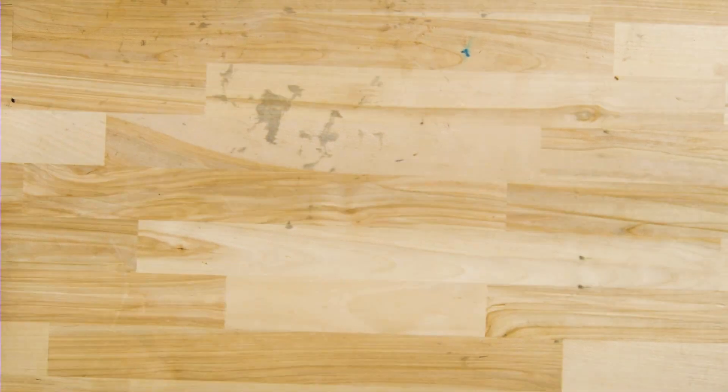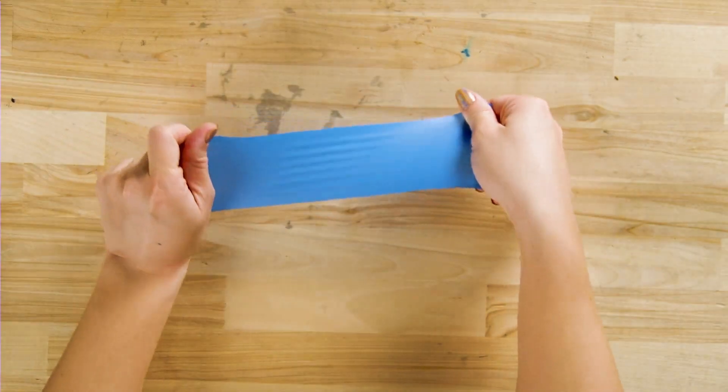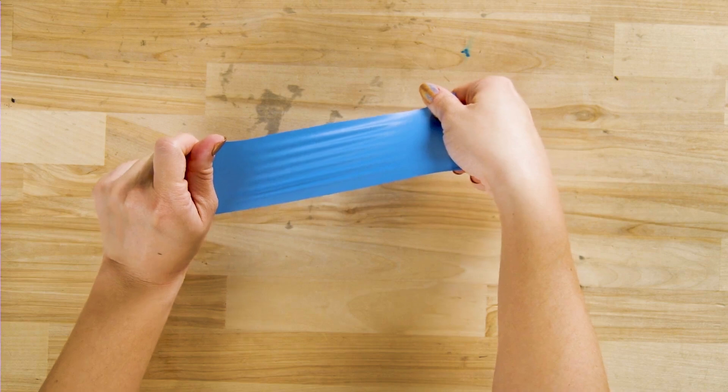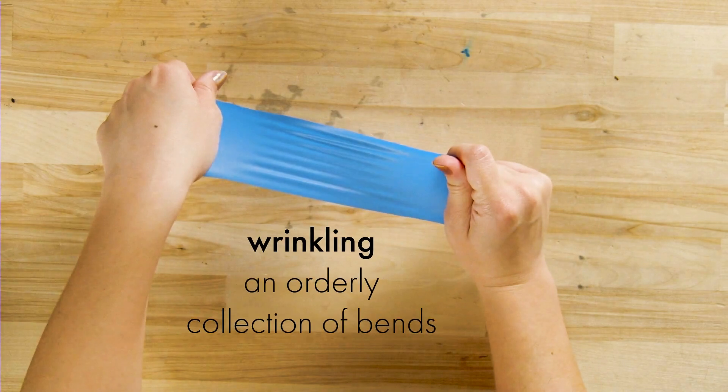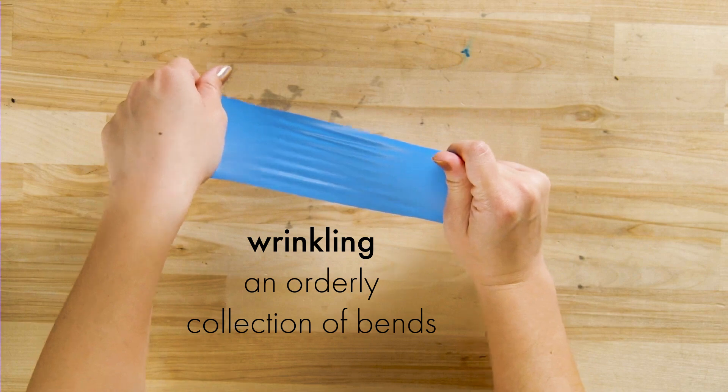Next up, we have wrinkling. This is a piece of soft elastic that's usually used in dental surgeries. When I stretch it and apply a bit of a twist, we get an orderly collection of bends, and their wavelength is much smaller than the dimensions of the sheet. Those are wrinkles.